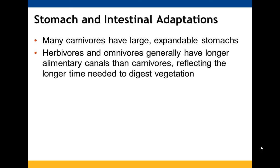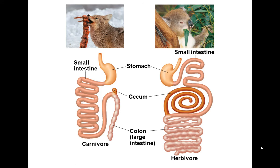Carnivores have larger, expandable stomachs. Herbivores and omnivores have longer alimentary canals because they have undigested material — grass and plants — that has to be fermented to be broken down, as opposed to carbohydrates, lipids, or peptides. The cecum is where undigested plant material gets fermented. In carnivores, there's not much space for that because it's not their primary food source. In herbivores, you need a much larger cecum to handle fermenting all that undigested plant material.